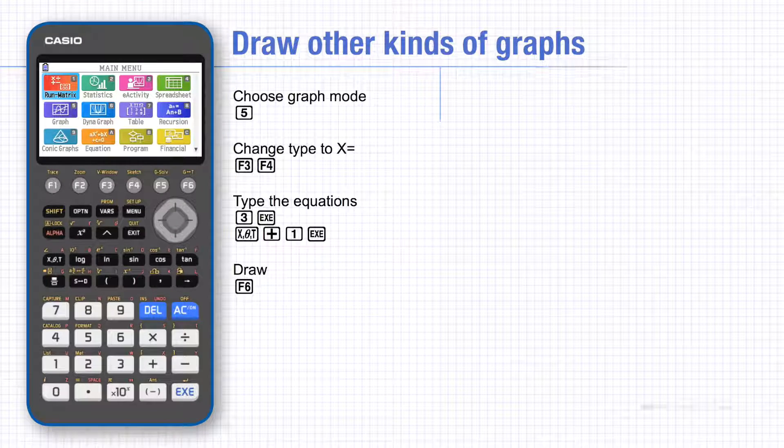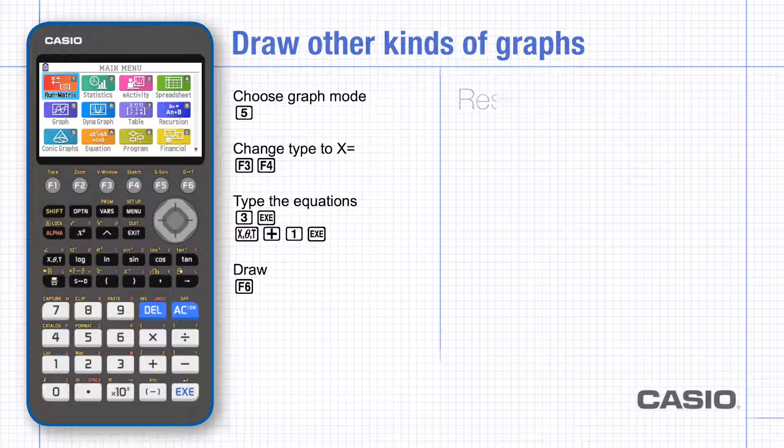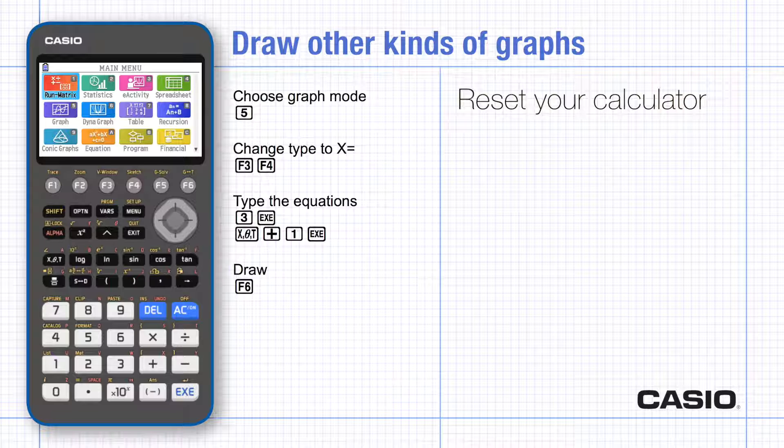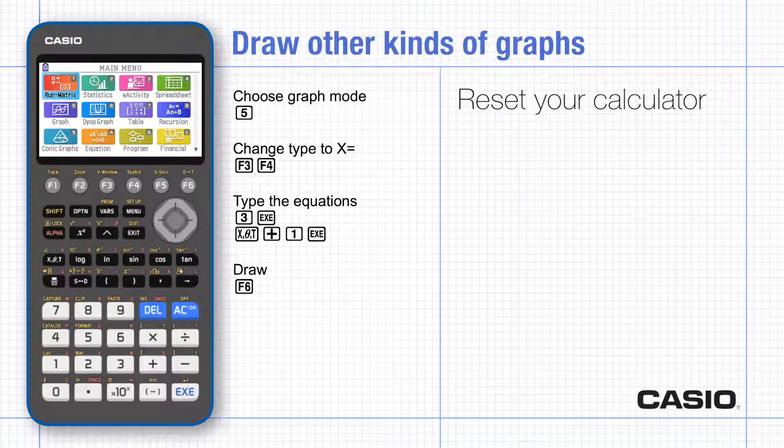In this tutorial we're exploring graphs given in forms other than y equals a function of x. In particular, graphing lines and curves of the form x equals, curves given parametrically, and graphing regions. There is a separate tutorial for polar coordinates.